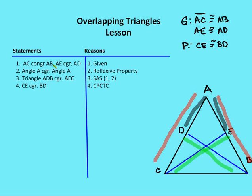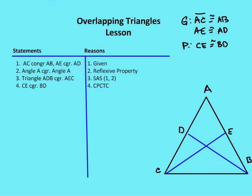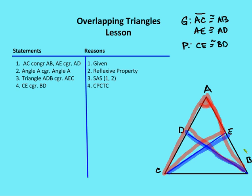I'm given AC is congruent to AB and AE is congruent to AD. I also know that angle A is congruent to itself. Now I have two triangles congruent by side-angle-side: triangle ACE and triangle ABD. I have sides AC and AB that are congruent, sides AD and AE that are congruent, and angle A congruent to itself. So by SAS, triangle ADB is congruent to triangle AEC. Now I can say that segment CE is congruent to segment DB by CPCTC.